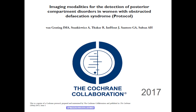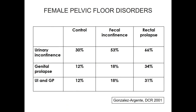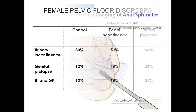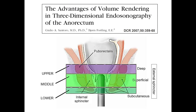We will publish in two months this Cochrane. This Cochrane was done with Abdul Sultan from the UK. We compared the three techniques — MRI, evacuation proctography, and ultrasound — to see which is best. The result is that there is no difference between MRI, defecography, and ultrasound. The only difference is that proctography is overstaging — it's looking too much compared to ultrasound, which is more reliable.